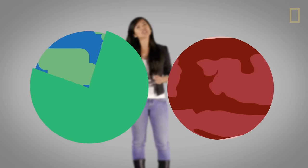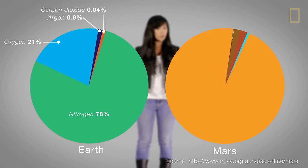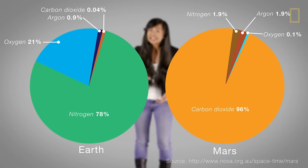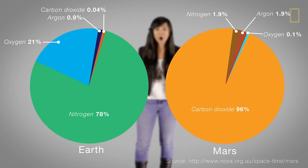Another key ingredient to support life is oxygen. On Earth, our atmosphere is made up of 21 percent oxygen and 78 percent nitrogen. On Mars, it's hard to come by oxygen at all. Ninety-six percent of Mars' atmosphere is carbon dioxide.